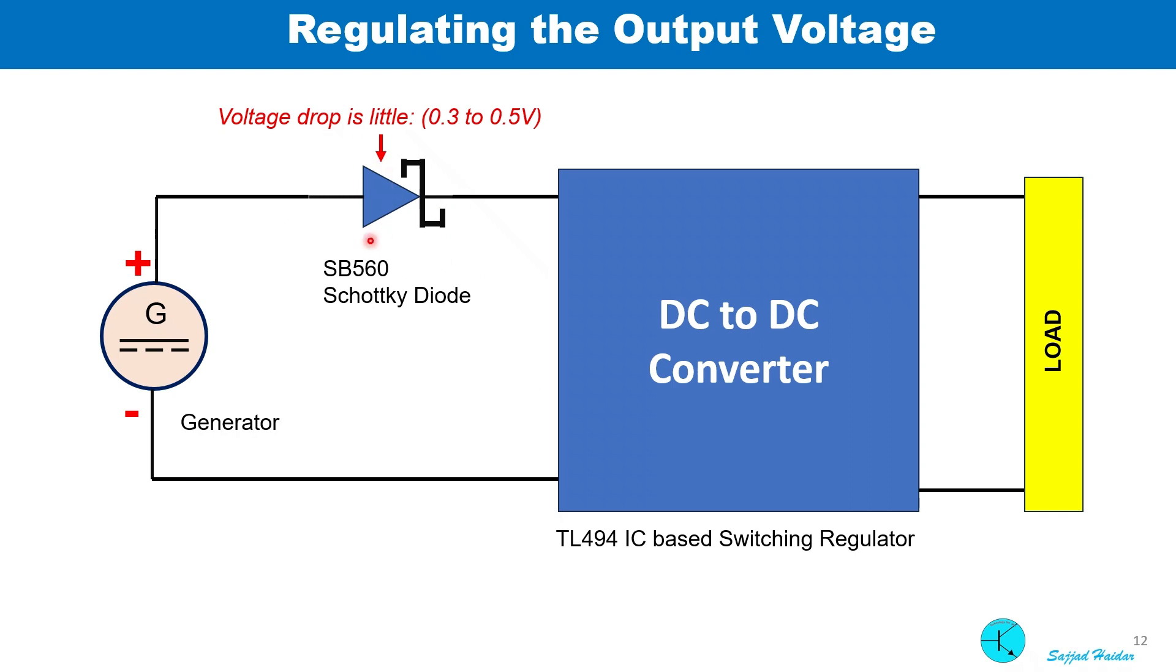A Schottky diode is to be used before the regulator for safety. If we start rotating the handle in the opposite direction, the polarity of the output will be reversed and that will be bad for the regulator circuit. Schottky diode has a less voltage drop compared to the ordinary silicon diode.